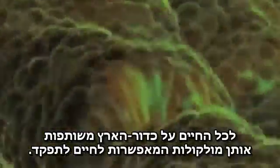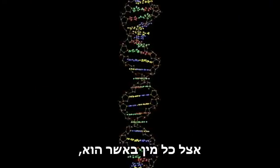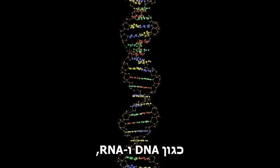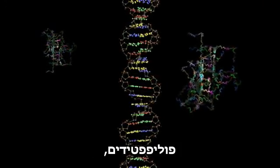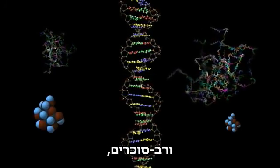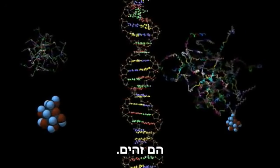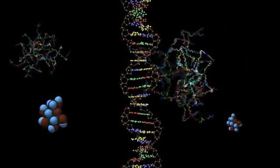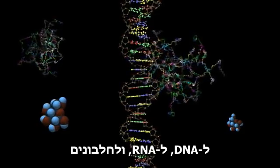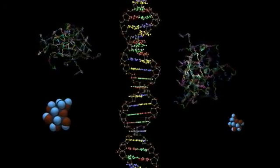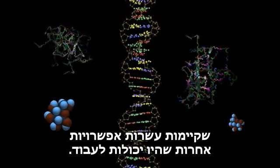All life on Earth shares the same molecules that allow life to function. Regardless of species, the polynucleotides like DNA and RNA, polypeptides like proteins, and polysaccharides like starches and glucose are identical. DNA, RNA, and proteins all have the same chemical form in spite of the fact that there are dozens of possibilities that would work.